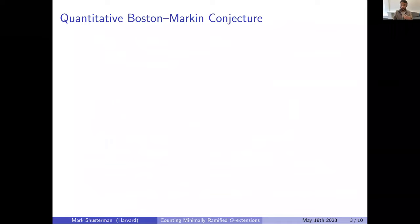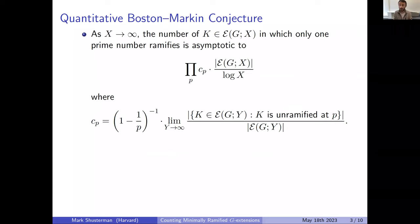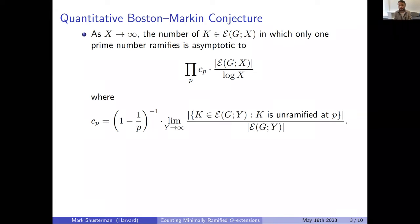This kind of problem has already been studied before, and Boston and Markin were the first to make pretty strong — in particular, quantitative — conjectures on the behavior of the count of extensions ramified at just one prime. Here is basically their conjecture, which I'm elaborating a little more to make as precise as possible. What I want to believe is that the number of extensions ramified at a single prime is basically the number of total extensions divided by a logarithm.